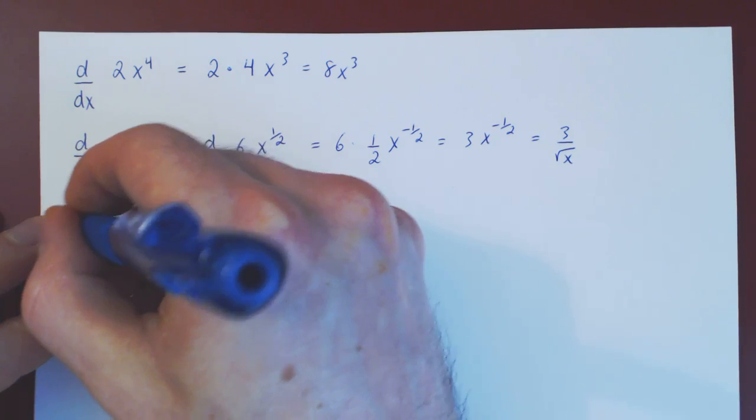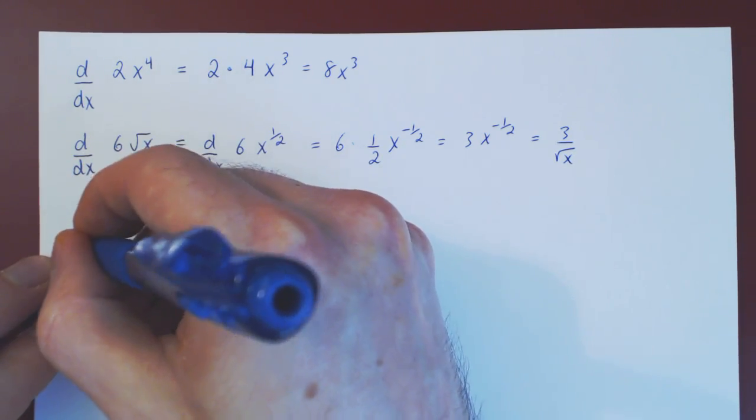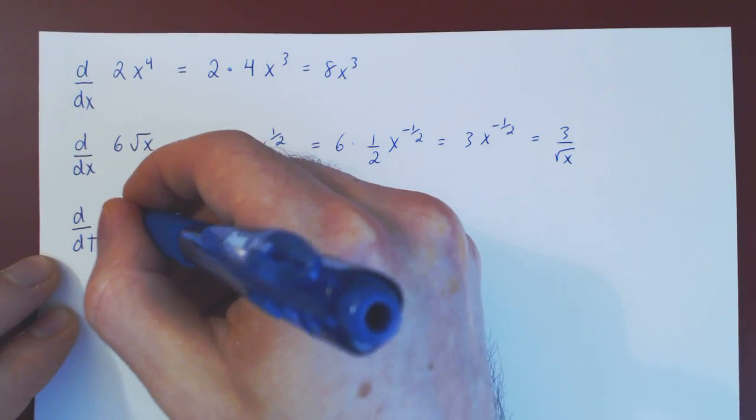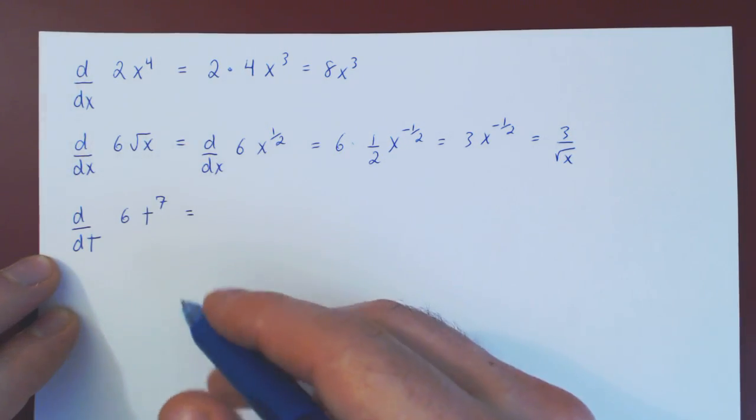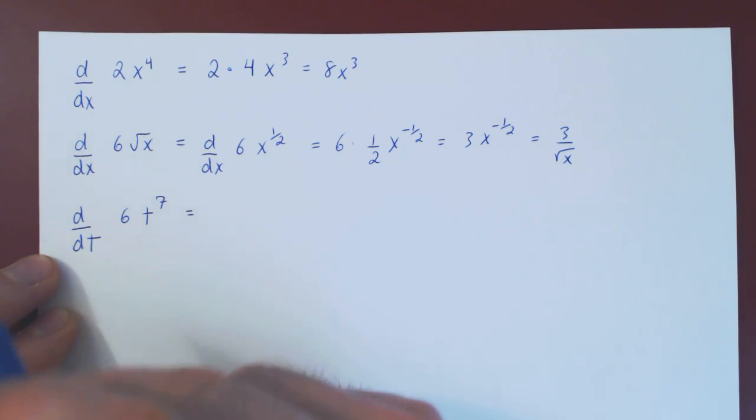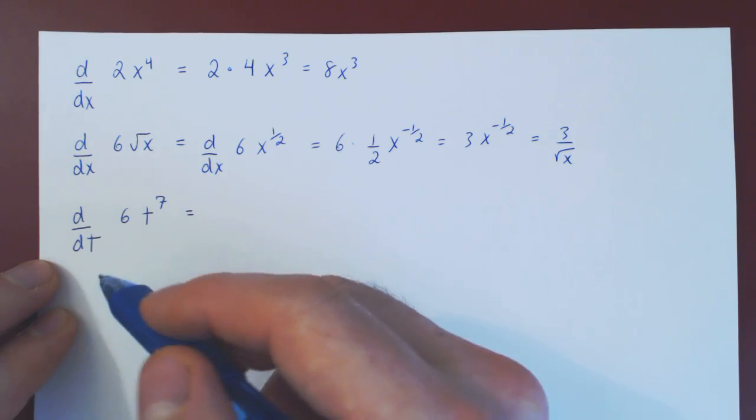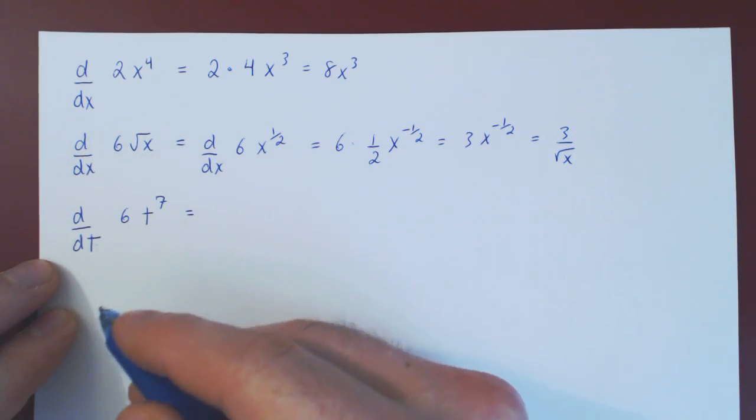If you take the derivative with respect to t of 6 t to the 7, the same rule applies. The choice of x here is an arbitrary choice, so we could change x by any other variable, here we have picked t.